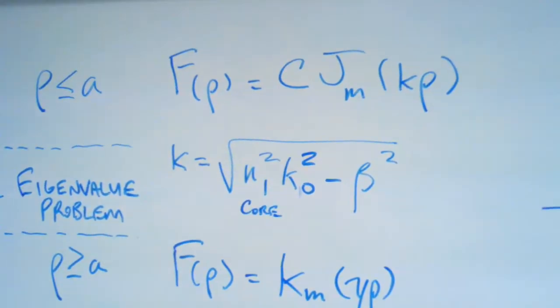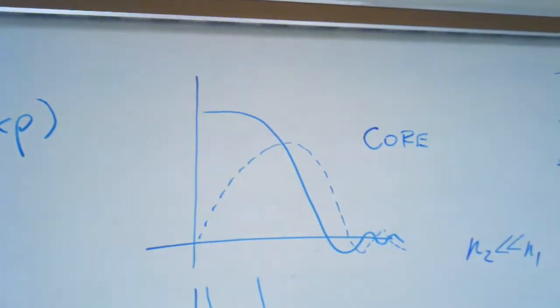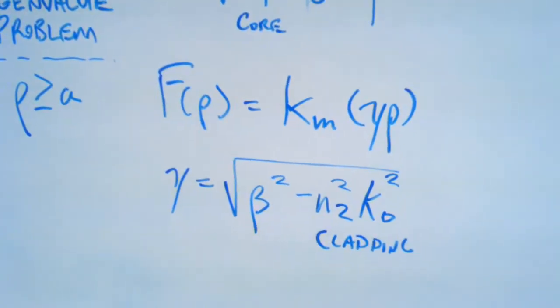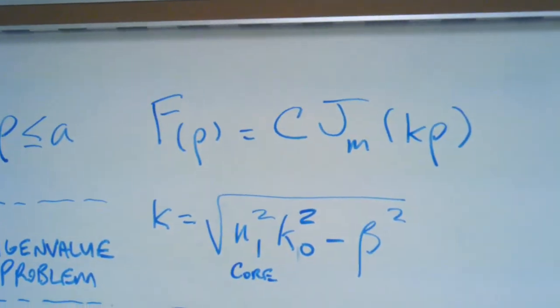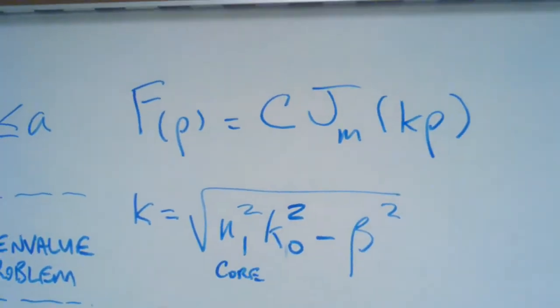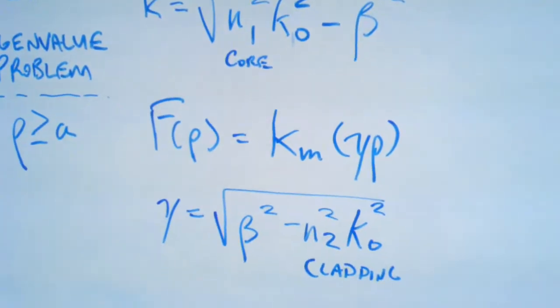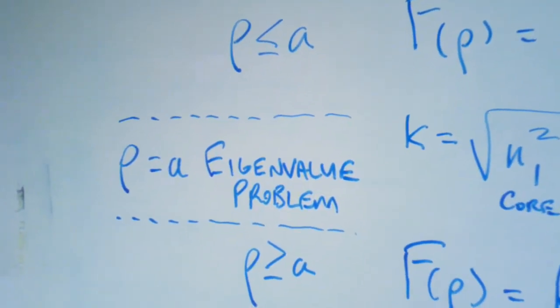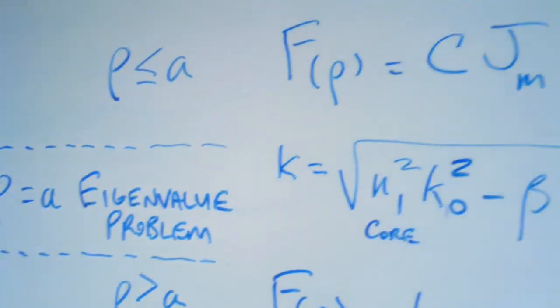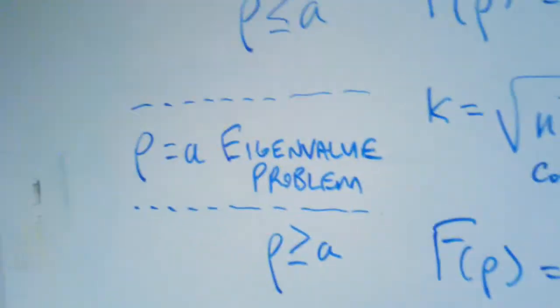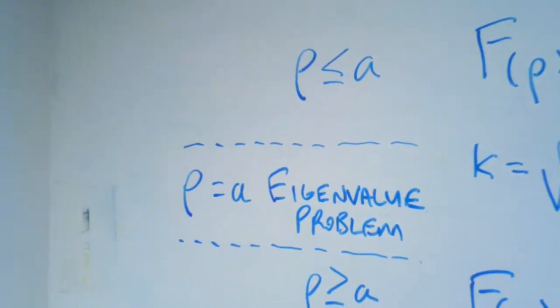Basically we had a Bessel's function of the first kind for the solution inside the core of the fiber, and we have a modified Bessel's function that we use for the solution inside the cladding. Those particular relations, kappa is the square root of the first refractive index of the core refractive index, square root of that wave number minus the propagation, square root of the propagation constant. We have a similar relation called gamma, but it just turns the terms around. We're talking about a solution where rho is less than or equal to A in the core side, and then rho is greater than or equal to A in the cladding side. In the middle there, where rho equals A, we can set up the eigenvalue problem.